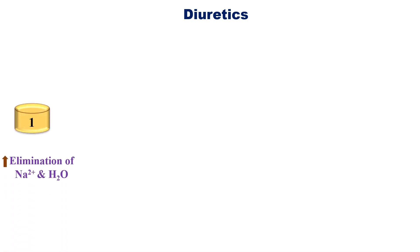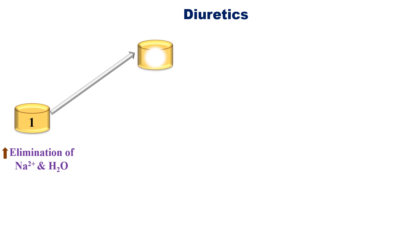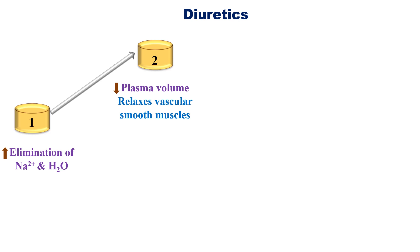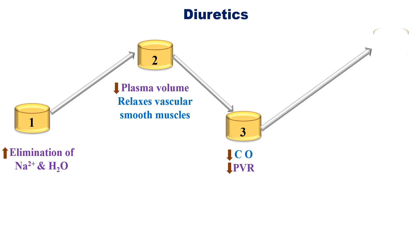Administration of diuretics to a hypertensive patient increases the elimination of sodium and water. When the elimination of sodium and water increases, plasma volume decreases. Specifically, elimination of sodium relaxes vascular smooth muscle by inhibiting vasoconstriction. This leads to decreased cardiac output and decreased peripheral vascular resistance, and finally blood pressure is reduced. Hence, diuretics are the most important drugs used to treat hypertensive patients.